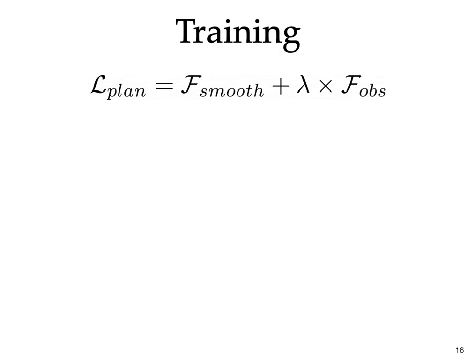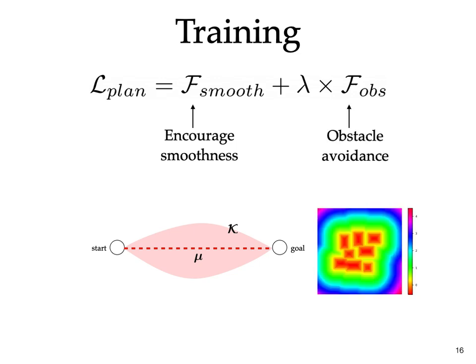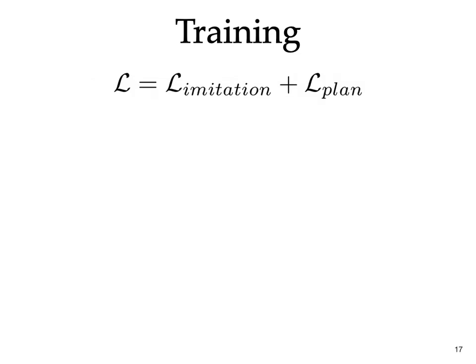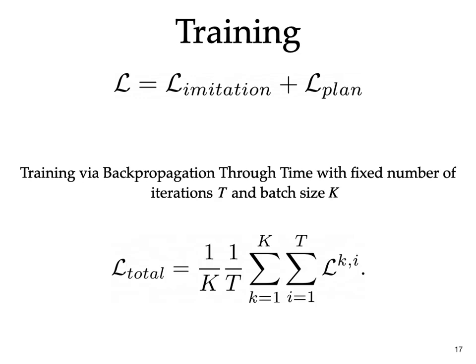Hence, the second component of our loss, L_PLAN, is used as a regularizer to encourage trajectory smoothness via the GP error and obstacle avoidance via an obstacle cost using a signed distance field, as is often done in motion planning. The overall loss is then a sum of the imitation and planning losses. Training is then done using backpropagation through time by fixing the number of planning iterations during the forward pass.